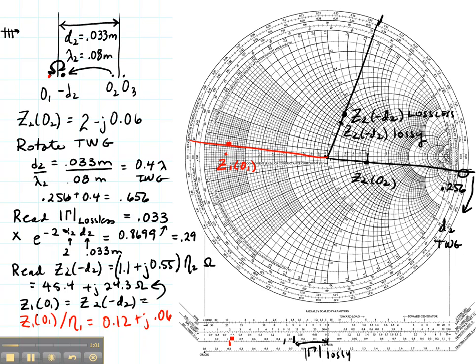And the magnitude of the reflection coefficient is about 0.8, not 0.08, it's about 0.8. And then we need to find the phase of the reflection coefficient. So we're going to read that right here. The angle of the reflection coefficient is about 68 degrees.